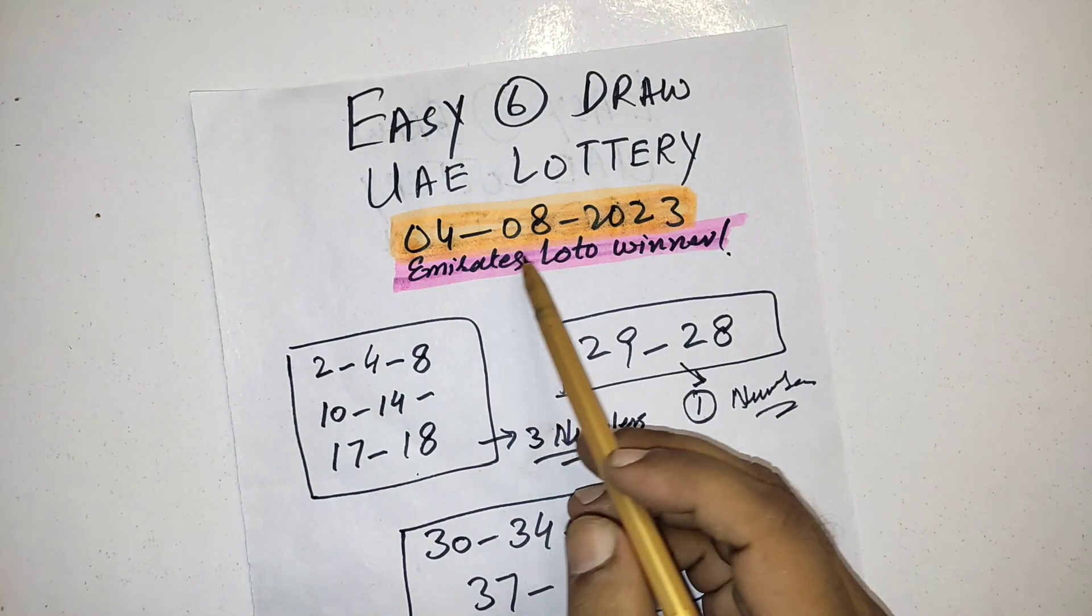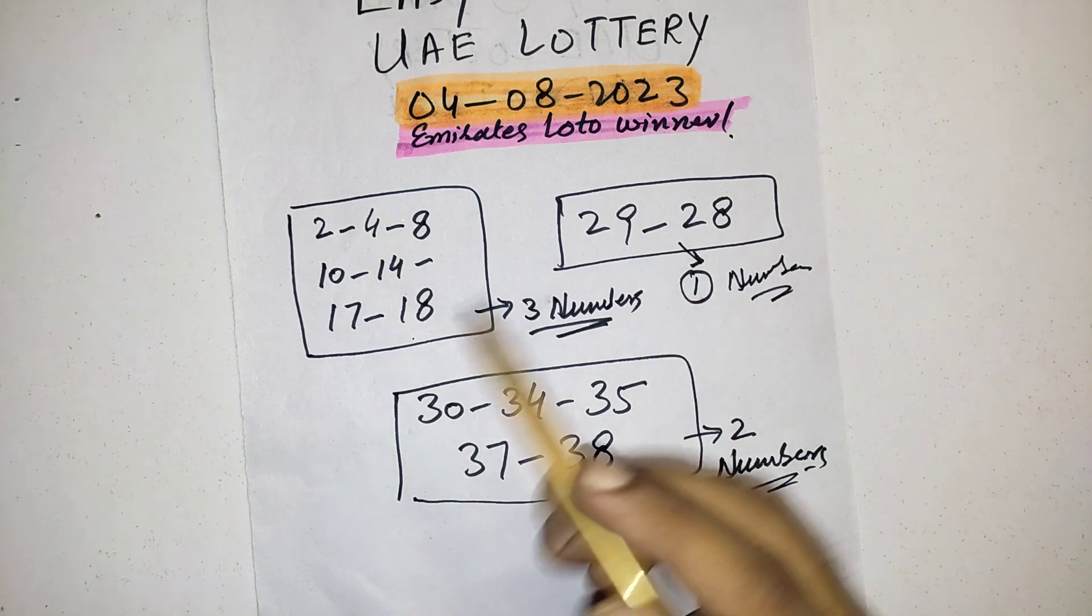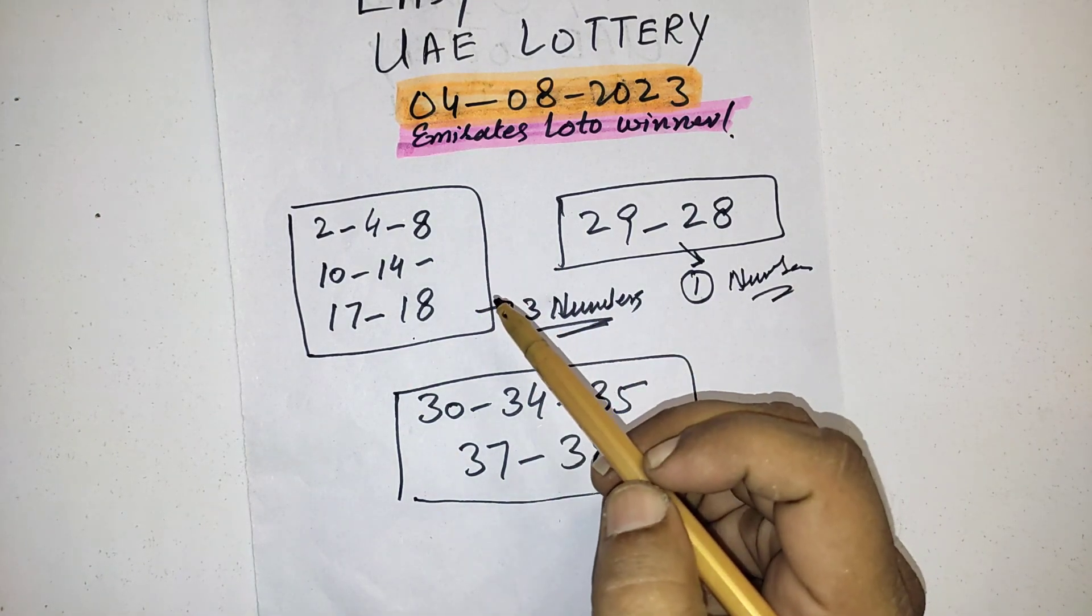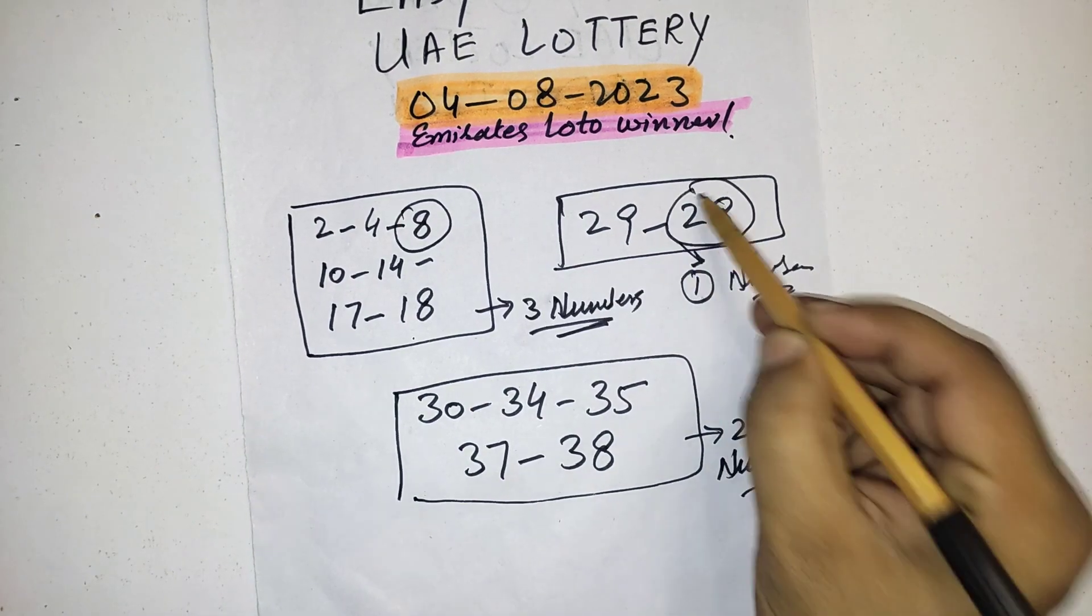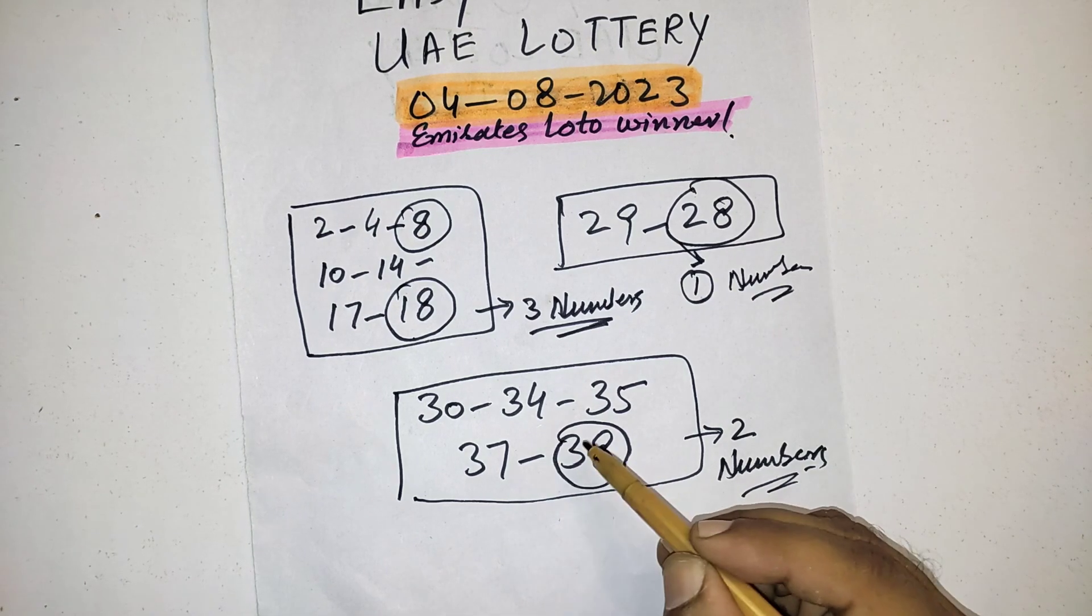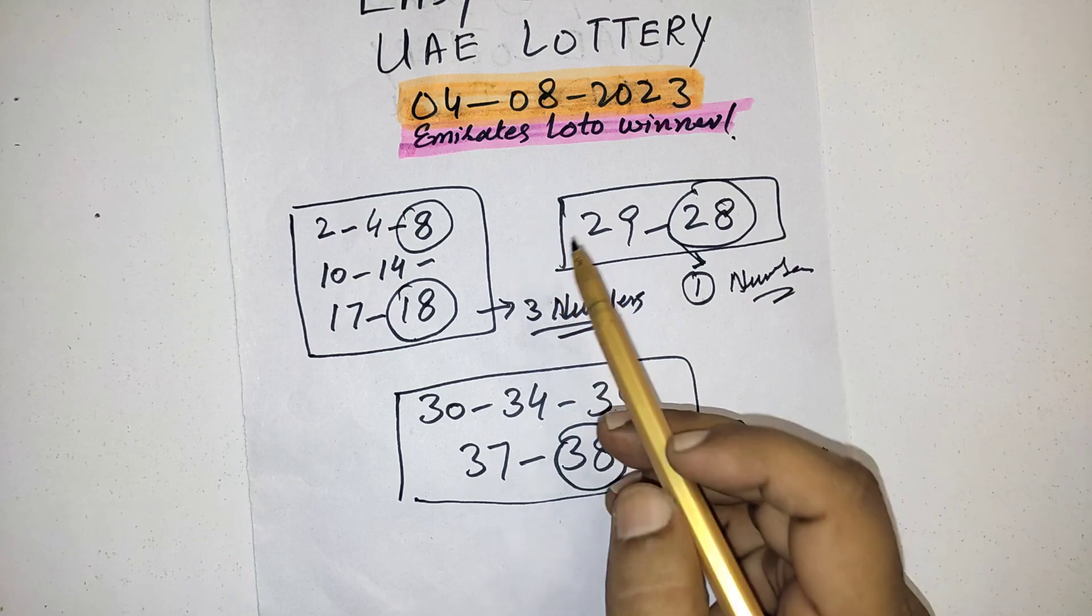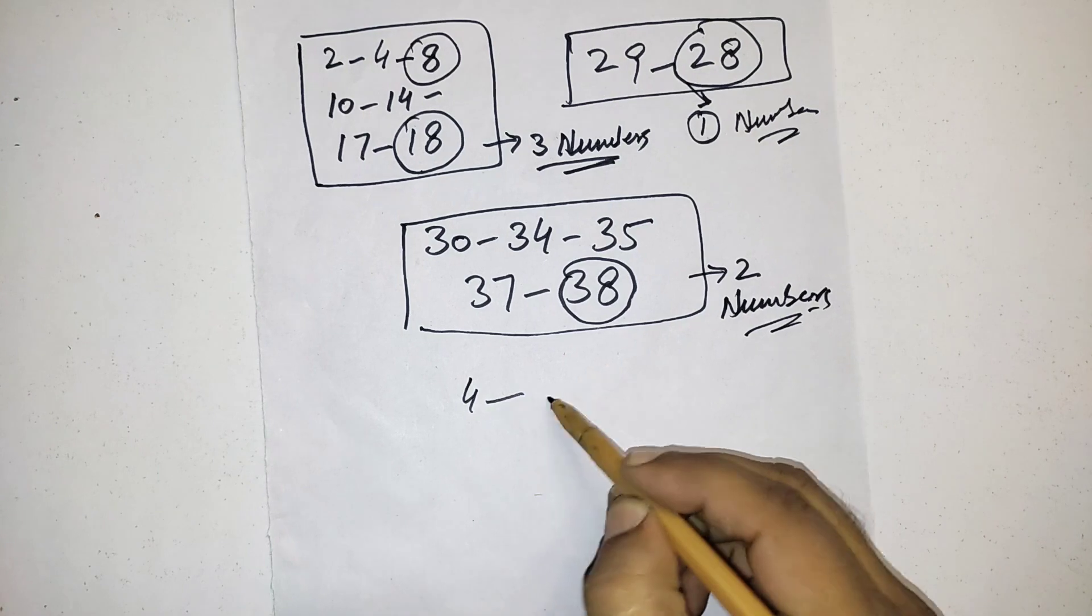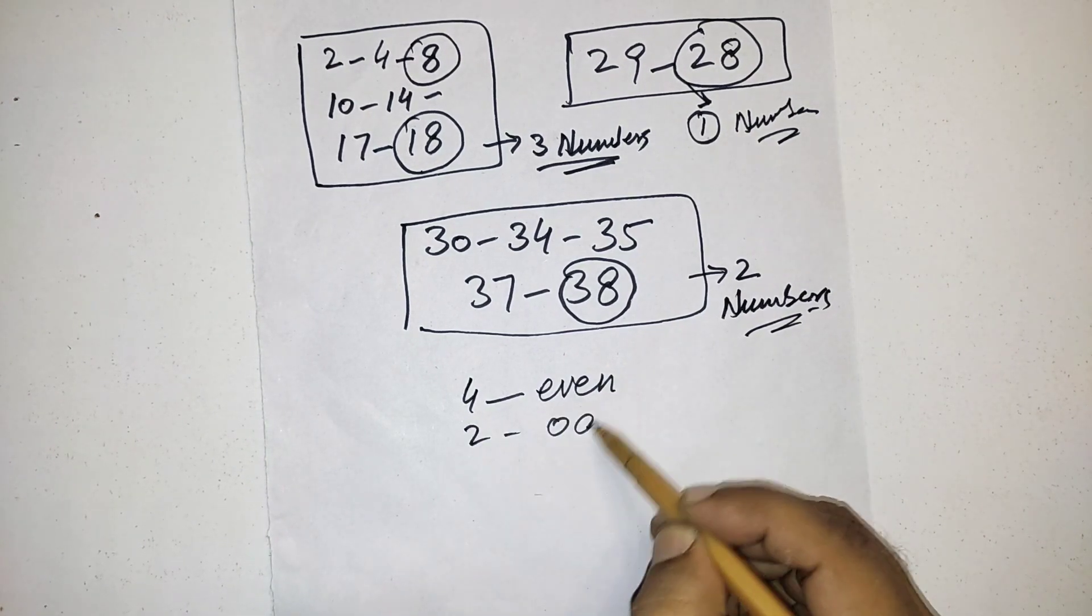As I already told you, this is the first draw of the month. Friends, whenever the first draw of the month, the best numbers are 8, 28, 18 and 38. These are the most favorite numbers for the first draw of the month, and the maximum numbers have chances to come in even and two numbers in odd.